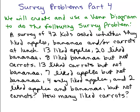We're going to create and use a Venn diagram with three sets to do the following survey problem. A survey of 42 kids asked whether they liked apples, bananas, and/or carrots at lunch. 13 liked apples, 20 liked bananas, 8 liked bananas but not carrots, 13 liked carrots but not bananas, 12 liked apples but not bananas, 4 only liked apples, and 2 liked apples and bananas but not carrots.